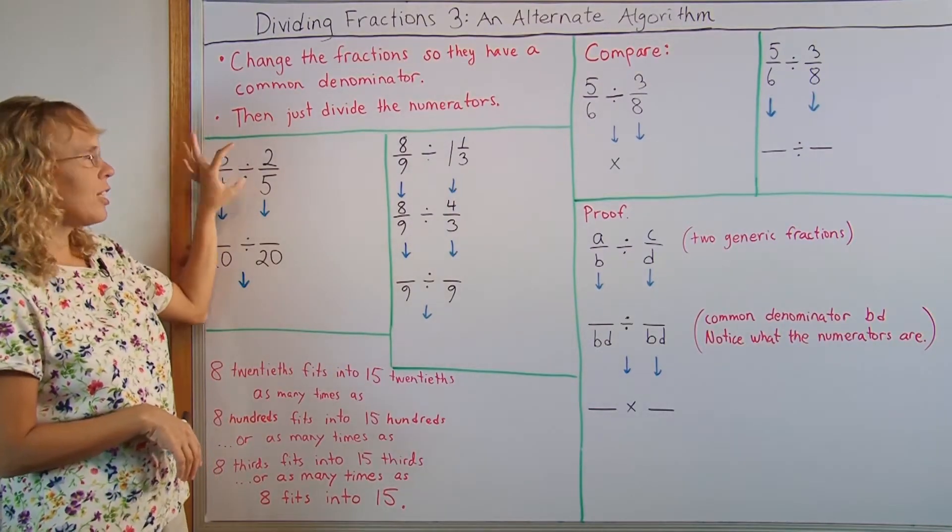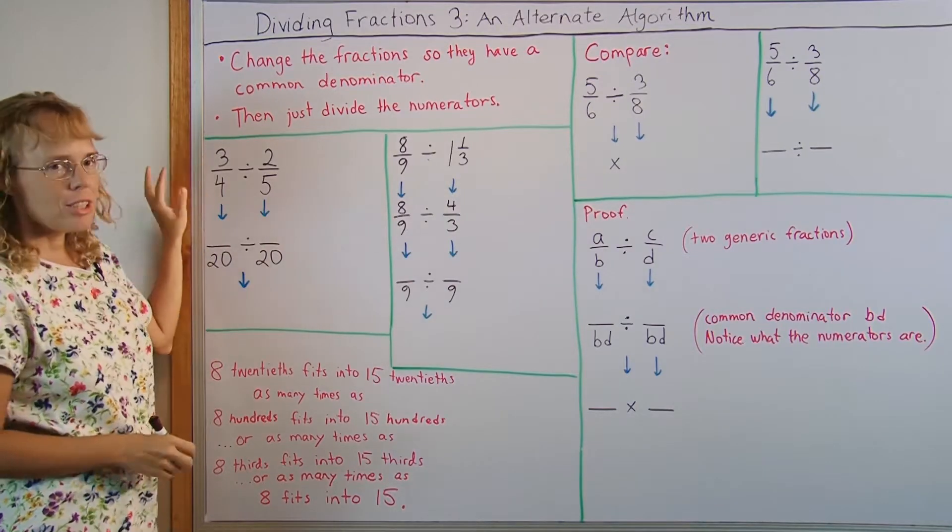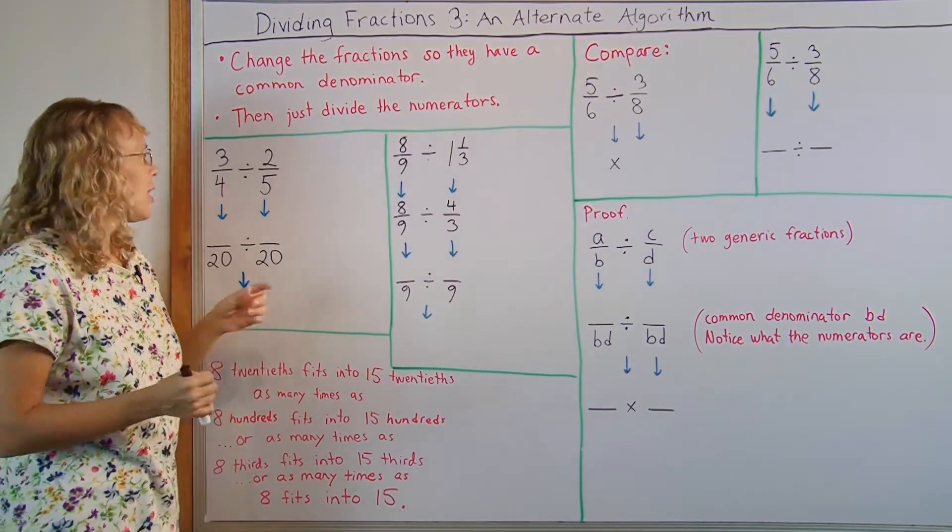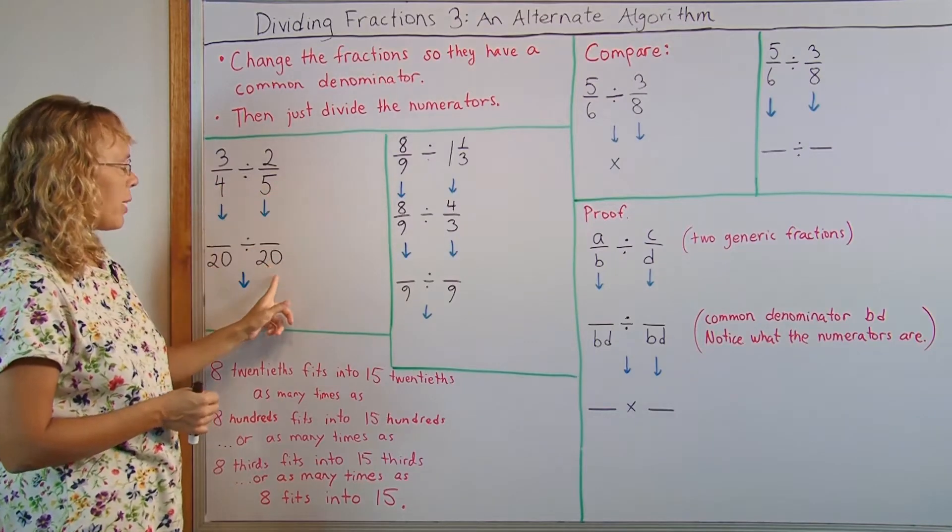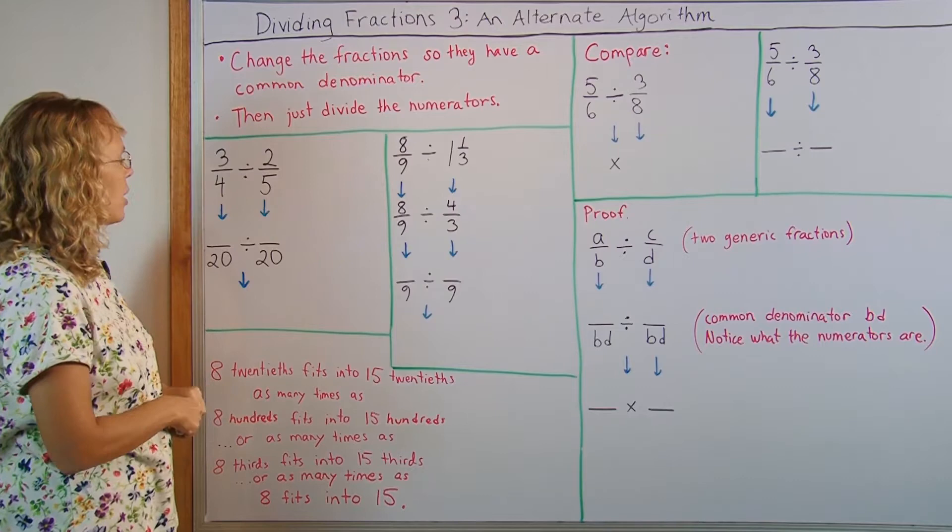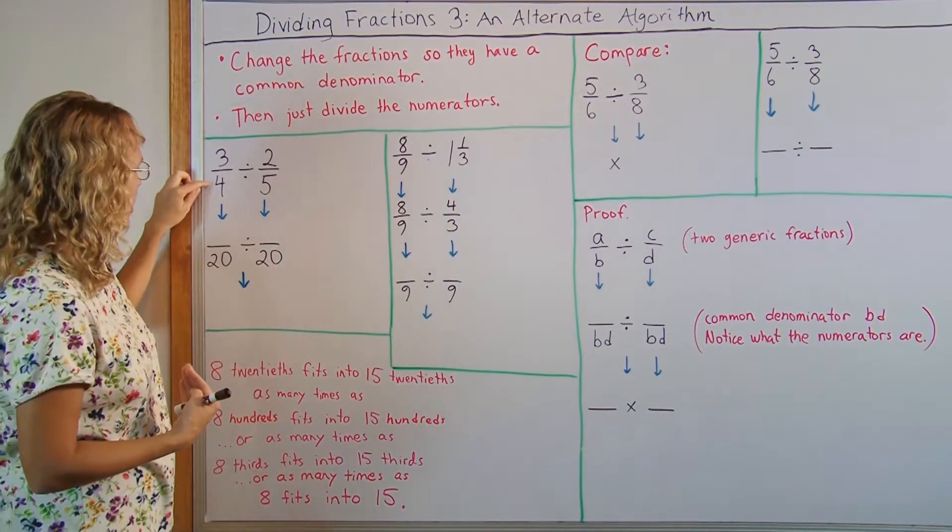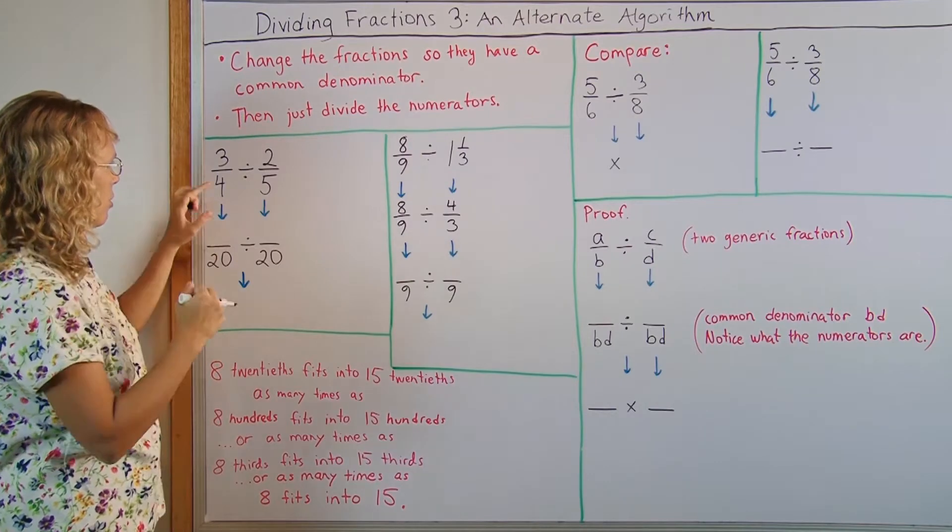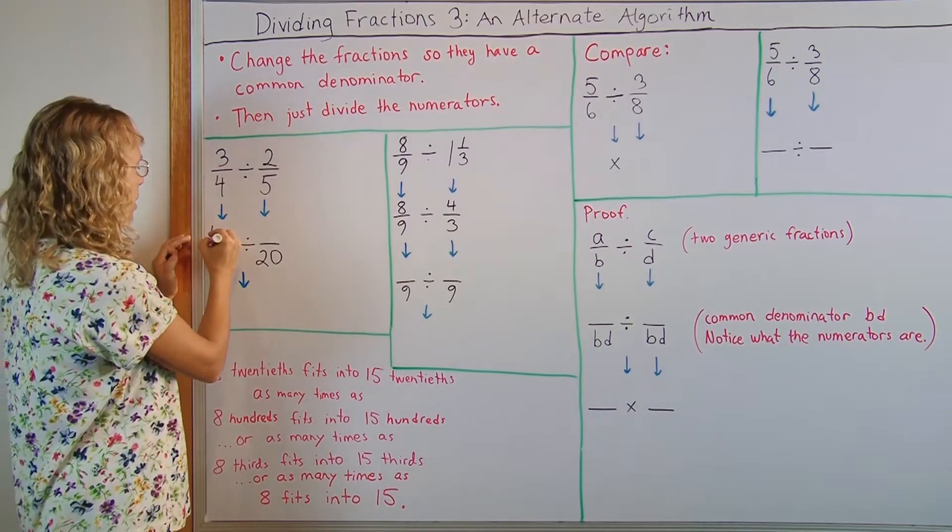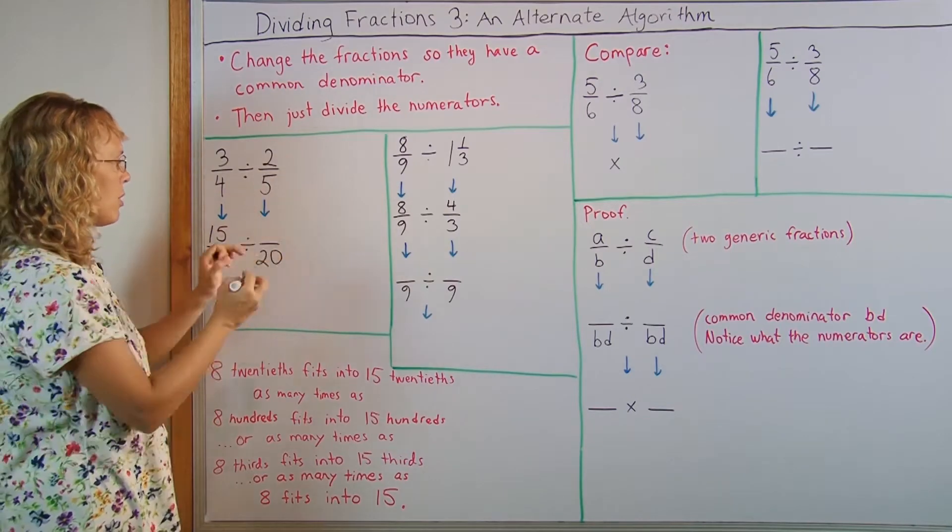I have two fractions here and we're gonna divide. And my first step is to find a common denominator. And since there's four and five here, I chose 20 as my common denominator. And now we're gonna write the fractions here using the principle of equivalent fractions. So 4 times 5 is 20, and therefore 3 times 5 goes here, 15. And here I have 5 times 4 here, so 2 times 4, or 8.